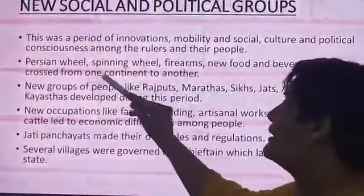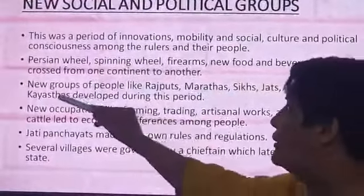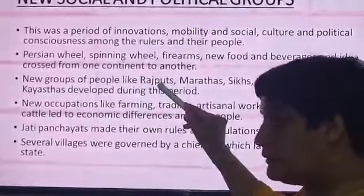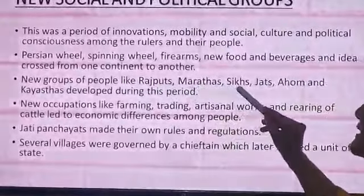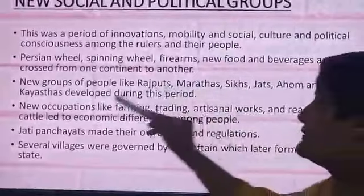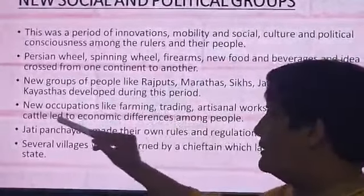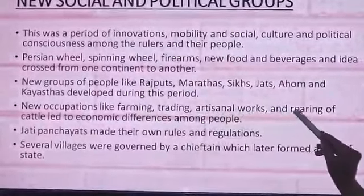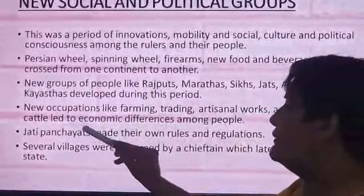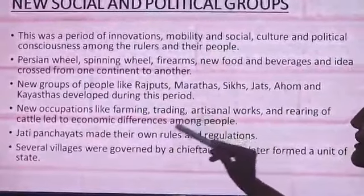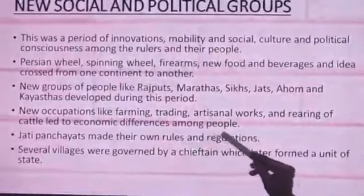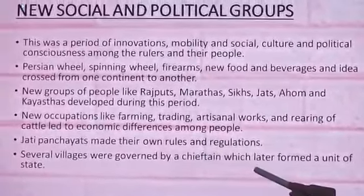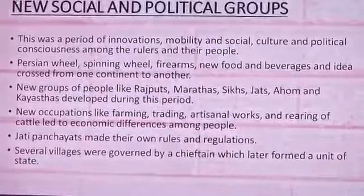New groups of people like Rajputs — known as sons of the ruler — Marathas, Sikhs, Jats, Ahoms and Kayasthas developed during this period. New occupations like farming, trading, artisanal work and rearing of cattle led to economic changes. There were differences among people, and Jati panchayats made their own rules and regulations for the Jati. Several villages were governed by chieftains, which later formed units of states.